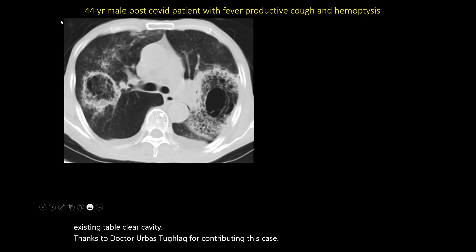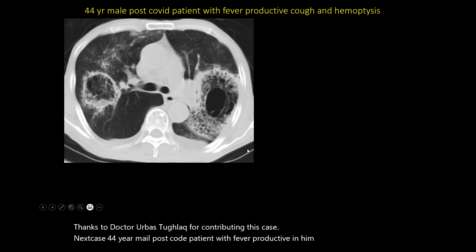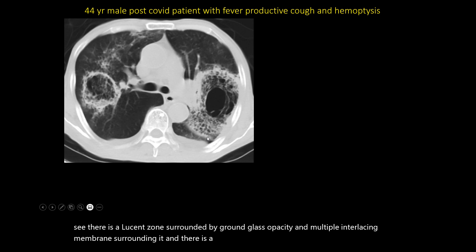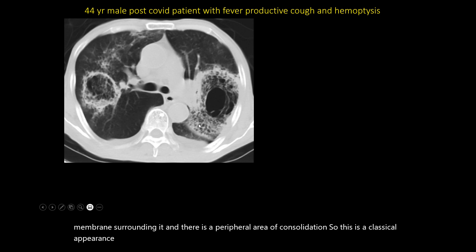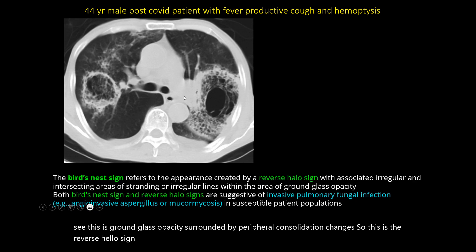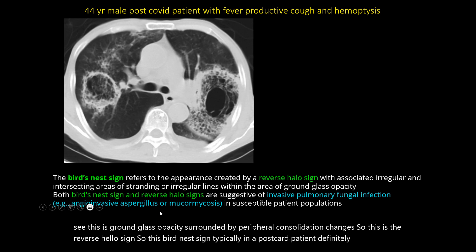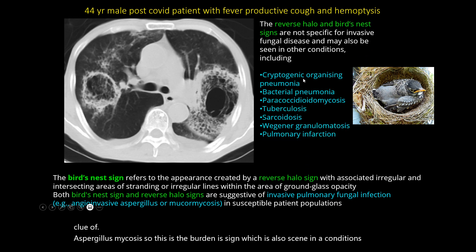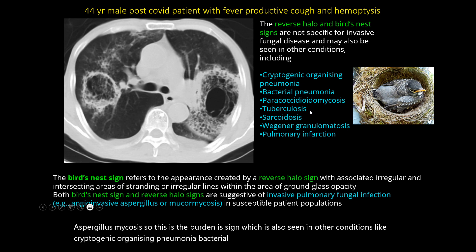Next case: A 44-year-old male, post-COVID patient, with fever, productive cough, and hemoptysis. There is a lucent zone surrounded by ground-glass opacities with multiple interlacing membranes and a peripheral area of consolidation — this is the classical bird nest appearance or bird nest sign. There is also ground-glass opacity surrounded by peripheral consolidation, which is a reverse halo sign. In a post-COVID patient, the bird nest sign gives a clue for invasive aspergillosis or mucormycosis. This sign is also seen in cryptogenic organizing pneumonia, bacterial pneumonia, paracoccidioidomycosis, tuberculosis, sarcoidosis, granulomatosis with polyangiitis, and pulmonary infarction.